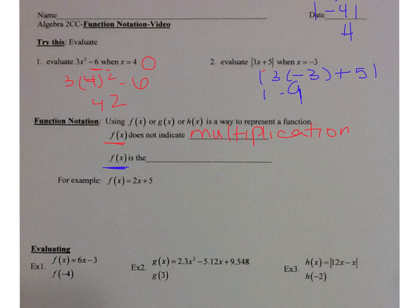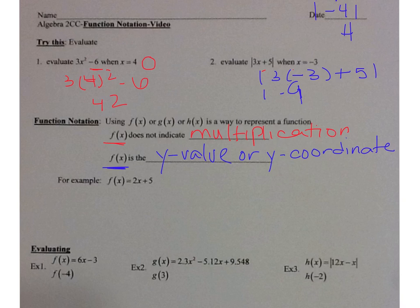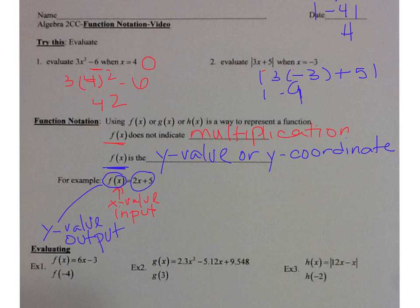So f of x means the y value, or the y coordinate of a point. Looking at this example equation, when you have a function, you have an input-output relationship. Whatever is inside the parentheses indicates your x value — that's your input. And f of x is your y value — that's your output. So 2x plus 5 is your y value.